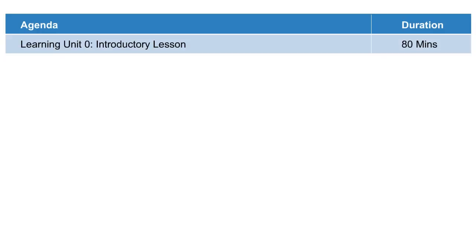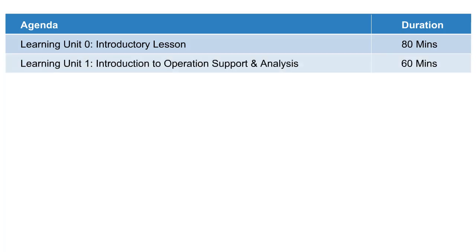Let me give you an overview of all the learning units of this tutorial. In all, we have 10 learning units including the introductory lesson. Learning Unit 1 talks about the introduction to operational support and analysis. It introduces the various terms and core concepts of OSA: purpose, objectives, scope, functions and value to business.